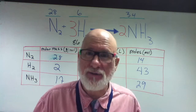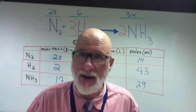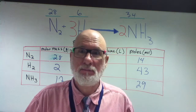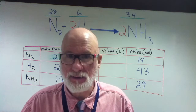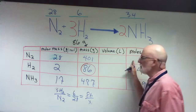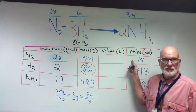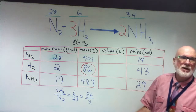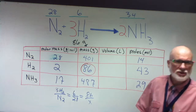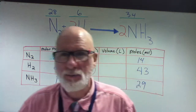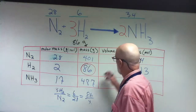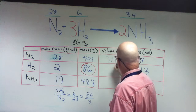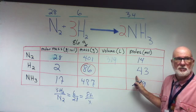22.4. So if you have two moles, it would be 44.8. If you have 10 moles, it would be 224. But if you have 14 moles, how much would it be? 314. And how about this one? 43 times 22.4 — go ahead, Kennedy.